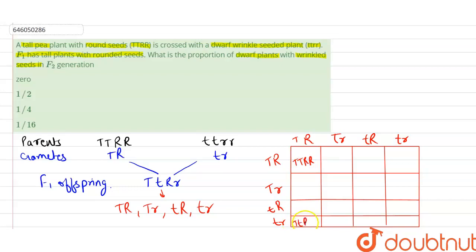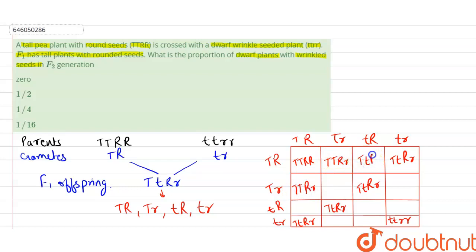Filling in the Punnett square: the 16 offspring combinations include genotypes such as TT RR, TT Rr, Tt RR, Tt Rr, TT rr, Tt rr, tt RR, tt Rr, and tt rr. The full F2 generation across all 16 boxes is now complete.